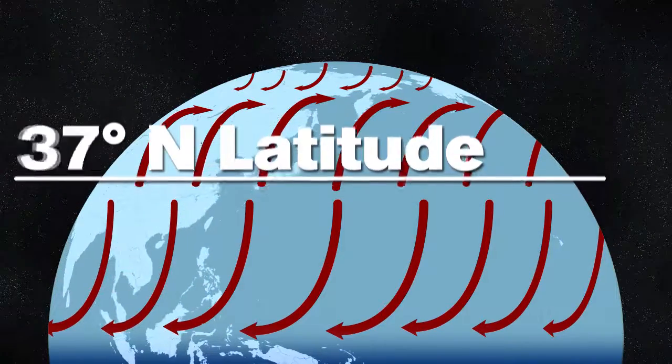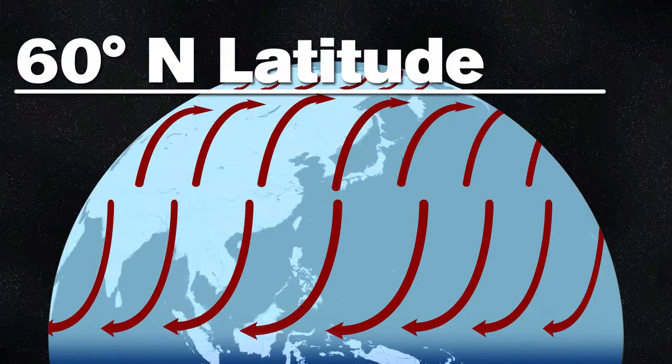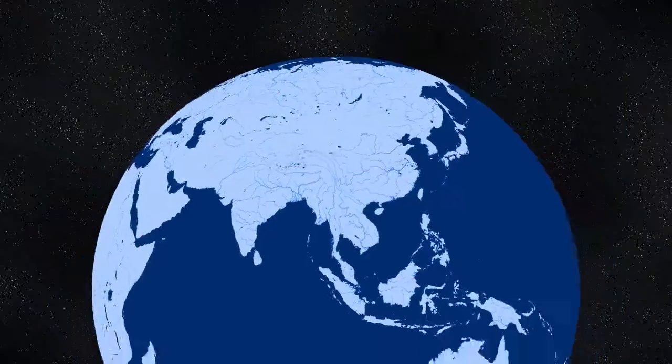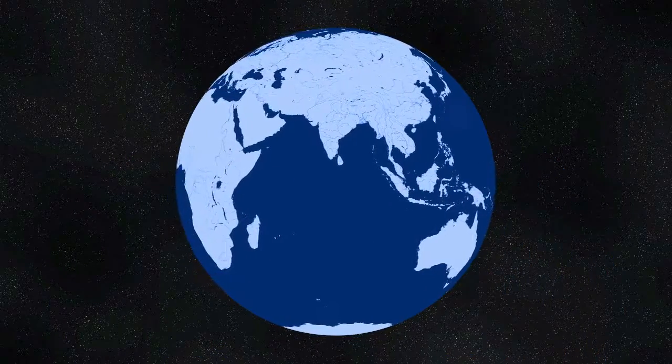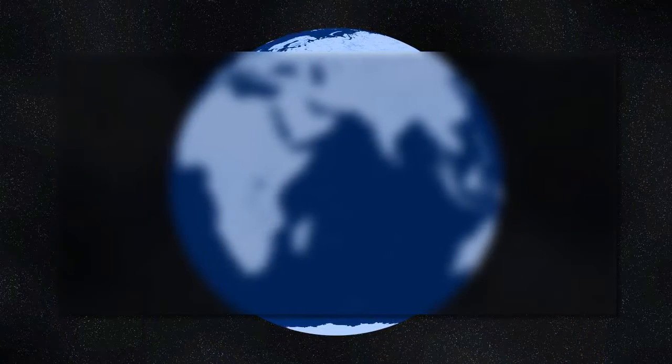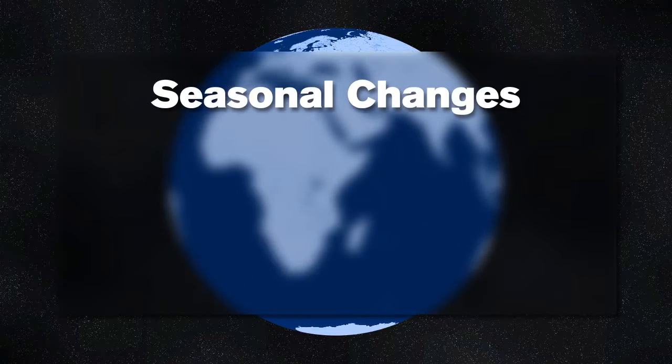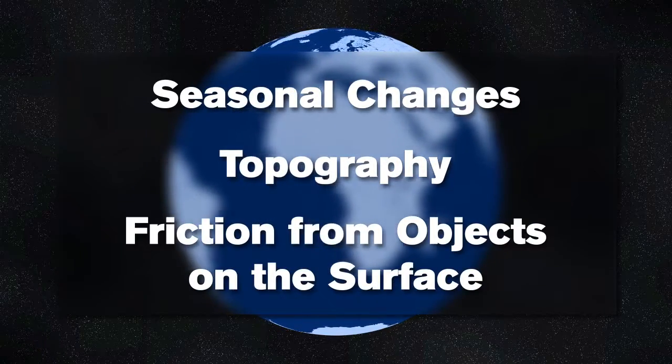from 30 north latitude to 60 north latitude and the easterly flow from the equator to 30 north latitude. There are several other factors that can also affect the circulation of air, things like seasonal changes, topography, and friction from objects on the surface.